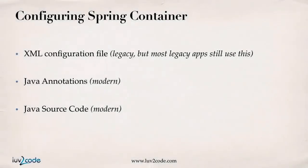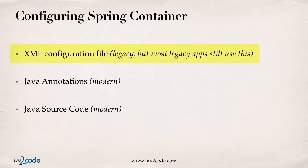There are three ways of configuring the Spring container. One is by using an XML configuration file. The other is using Java annotations. And then finally you can make use of Java source code. We'll cover all of these approaches in this course. The XML configuration file is the original approach used when Spring was first released — it's a legacy, but most legacy apps still use it. If you're joining a Spring team or a company with existing Spring applications, there's a very high likelihood their applications still use XML config files.